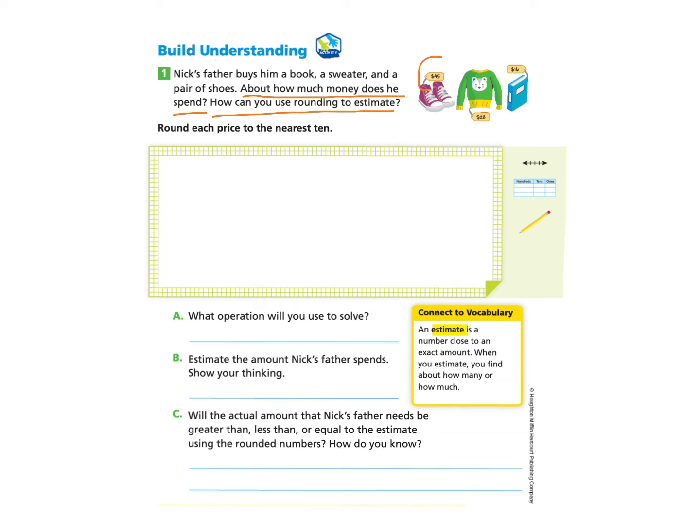We see over here that the shoes, the sweater, and the book all have a price tag next to them with the amount of money that each item costs. They also give us the instruction to round each price to the nearest 10.